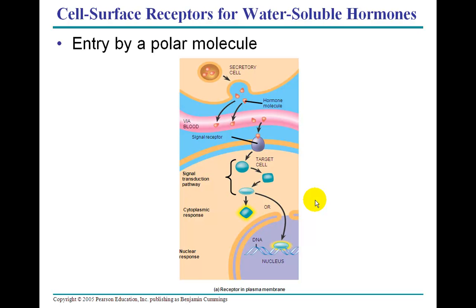The target cell passes that hormone into the signal transduction pathway, which is a reconfigured protein or molecule of some sort, which enters either into the cytoplasm and then has a response there, or actually into the DNA right through the nuclear membrane. That nuclear membrane is nothing more than a phospholipid bilayer. So the action is going to take place in one of two places: in the cytoplasm, where proteins are being manufactured, or in the nucleus, where messenger RNA is being dispatched into the cytoplasm to the ribosomes to be manufactured into new proteins.